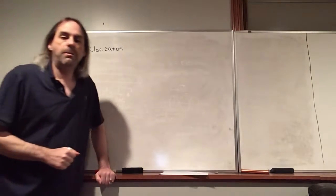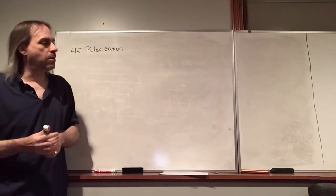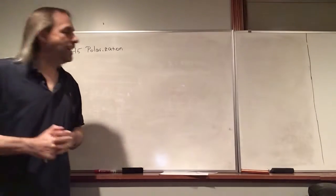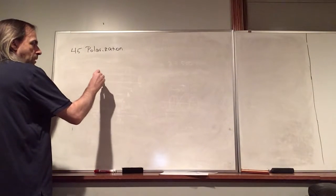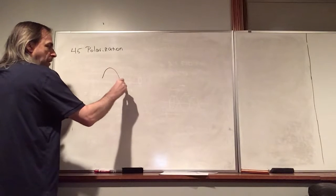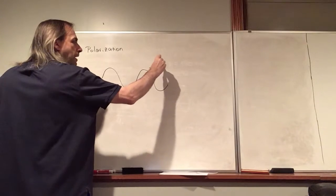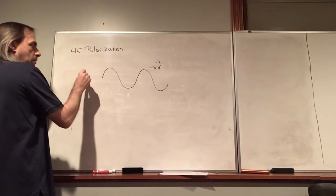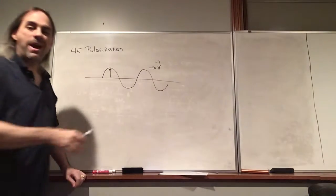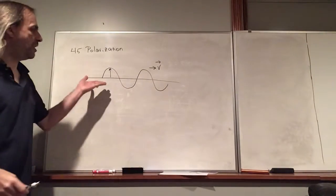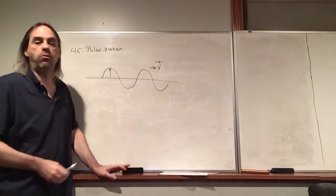We're going to talk about something called polarization. We mentioned earlier that we can describe a light wave just with the electric field. So, if we have a wave where we plot the electric field, and the wave is propagating to the right, you can tell at any point on this wave where the magnetic field is pointing using the right-hand rule.